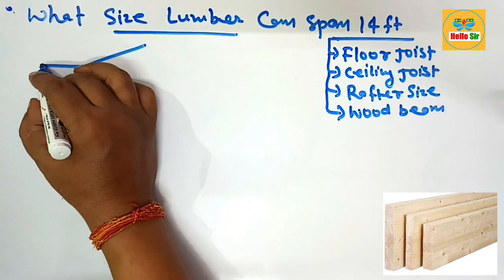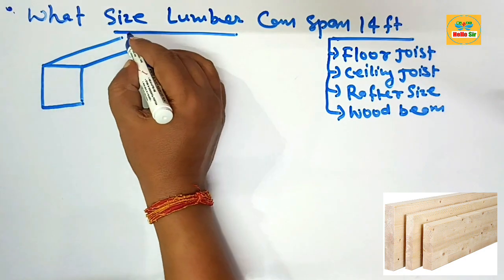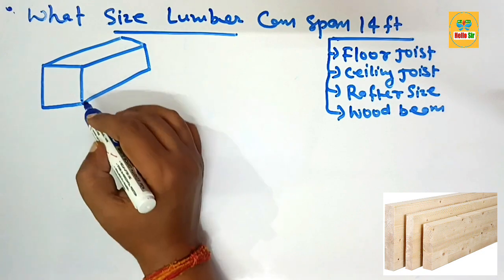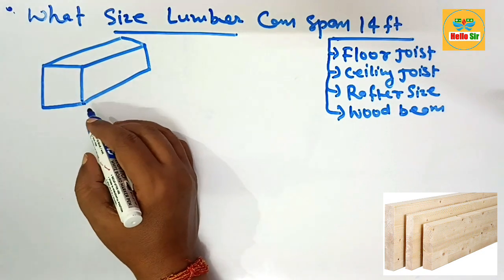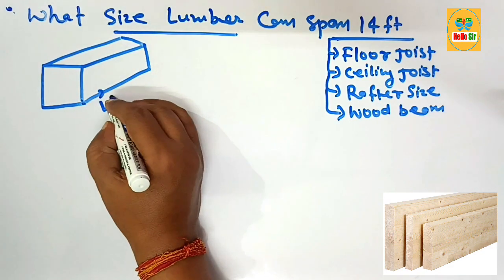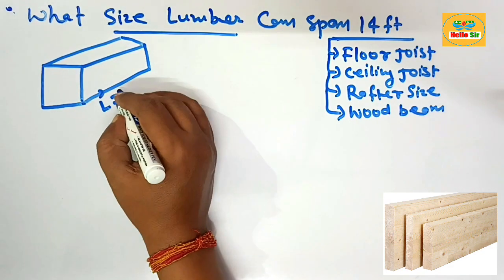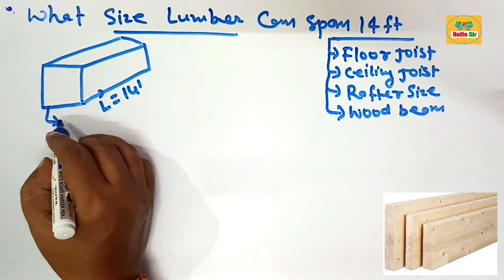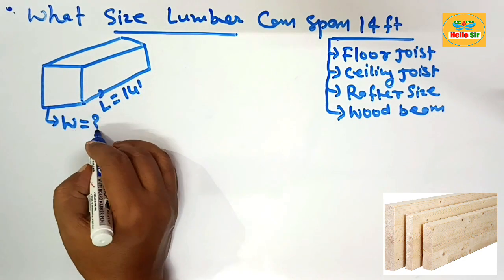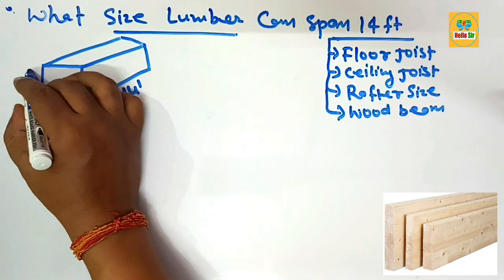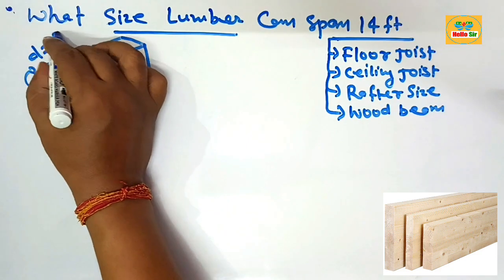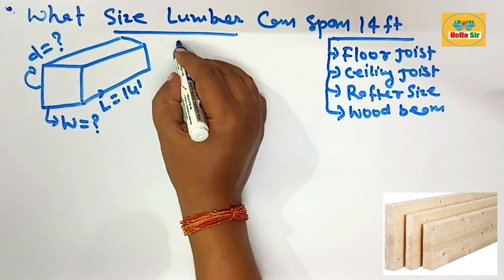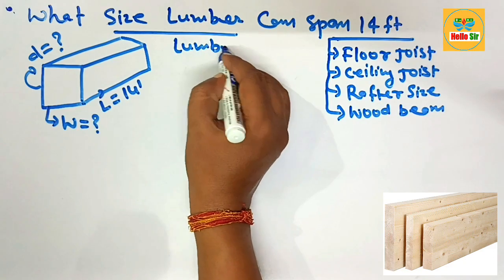Here we make a rough diagram. This is dimensional lumber — the length or span is 14 feet. The width and depth are what you need to determine and calculate.